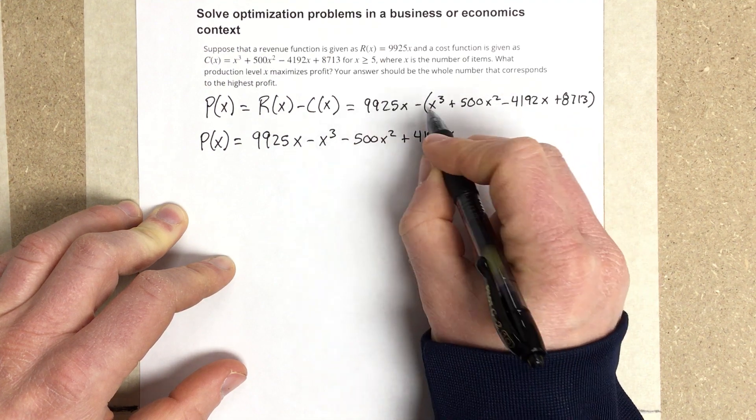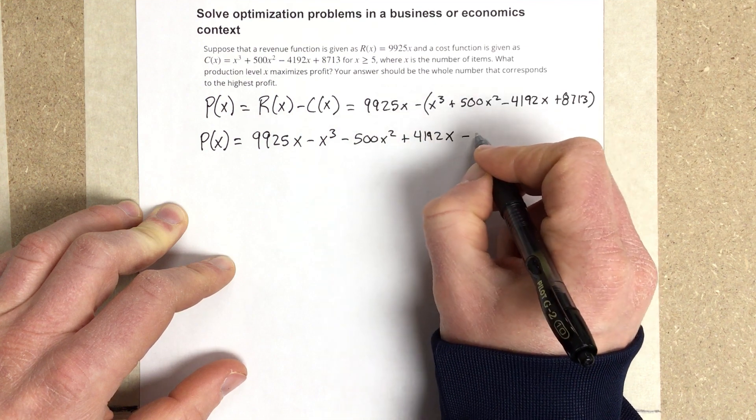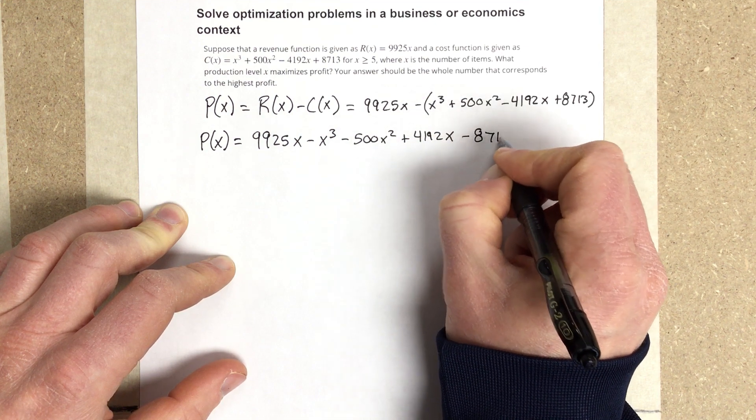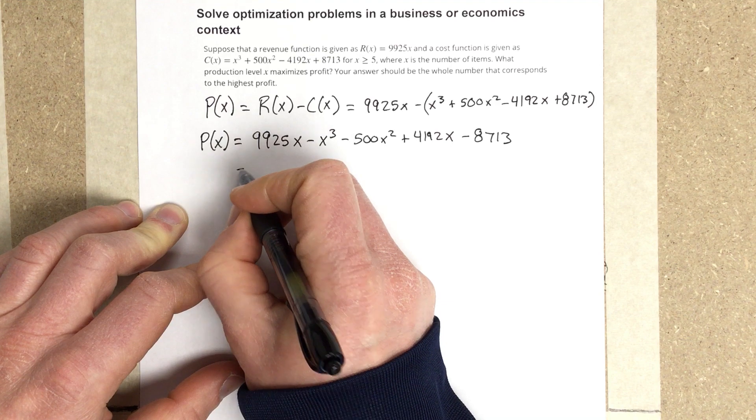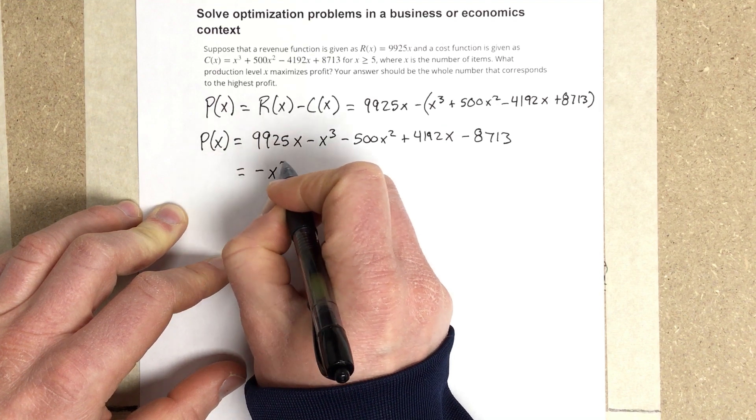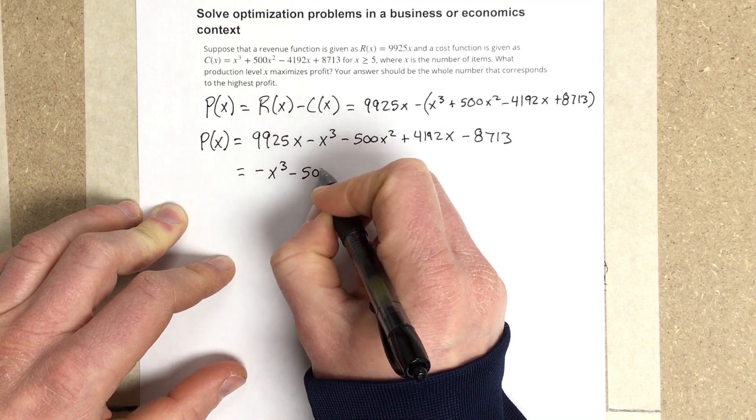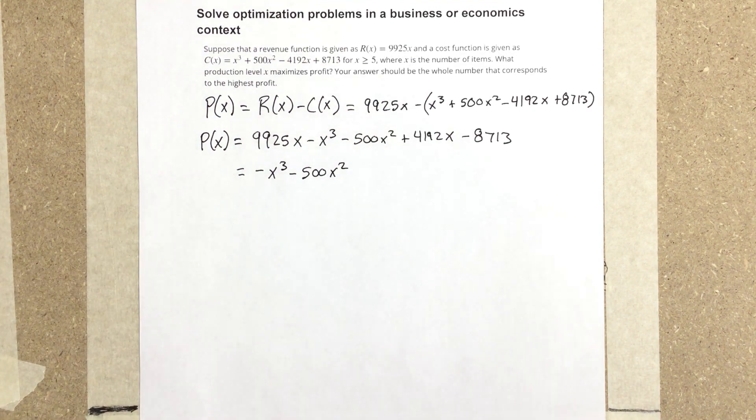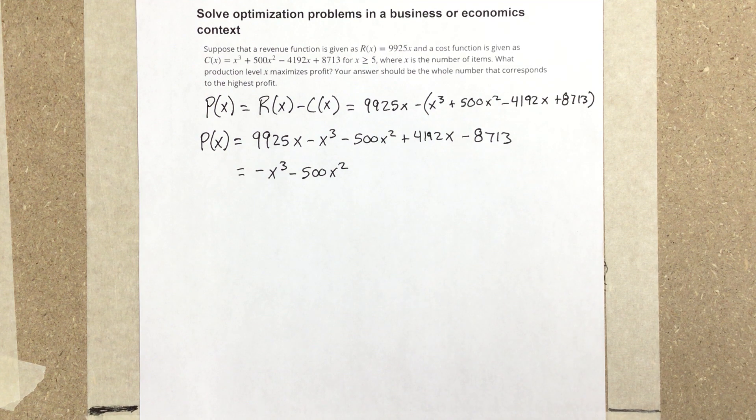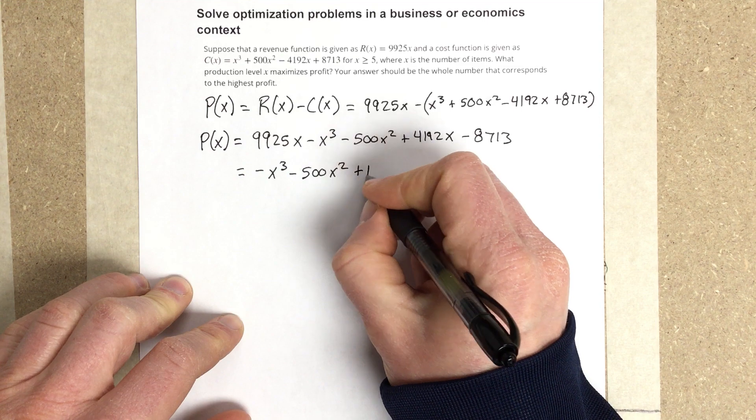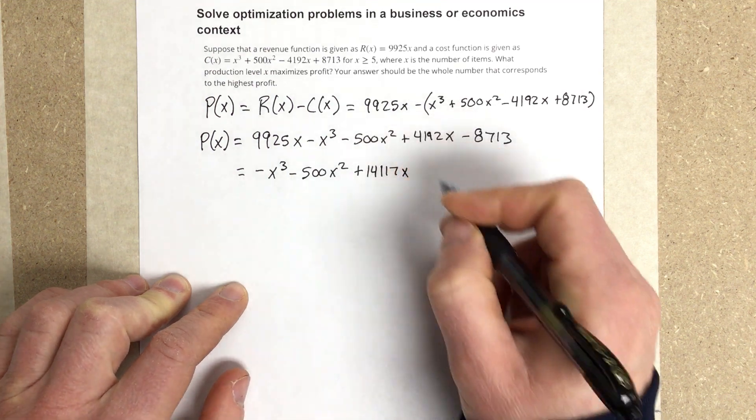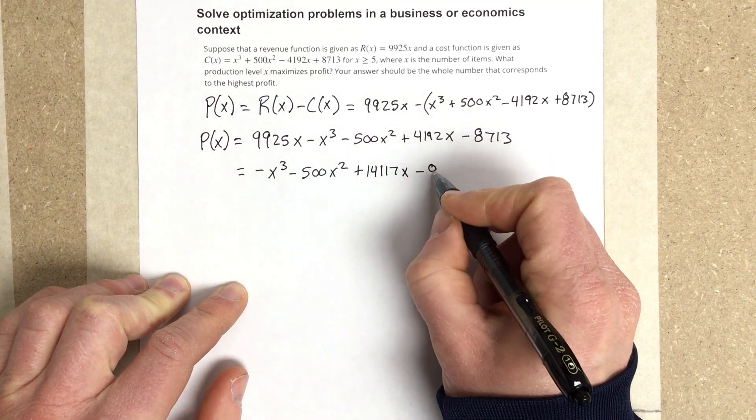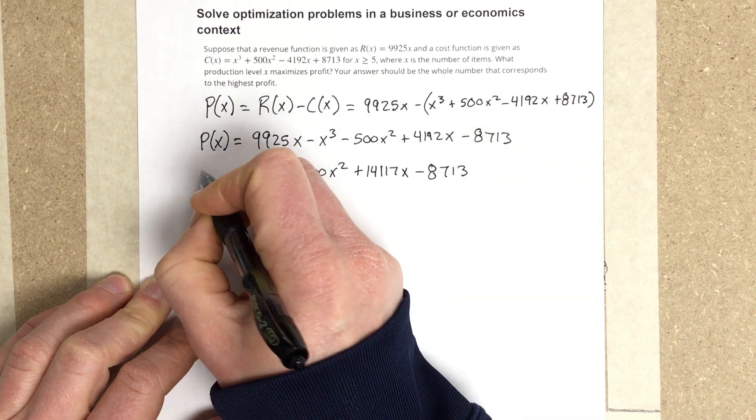Let's combine some stuff together. This 9,925x can combine with the 4,192x, and we get -x³ - 500x². Let's combine those together and we get 14,117x minus 8,713, and that's P(x).